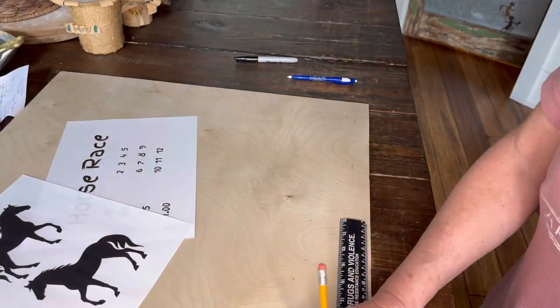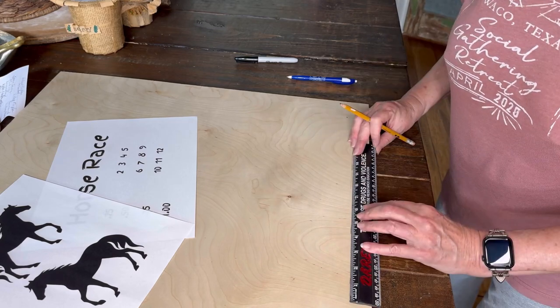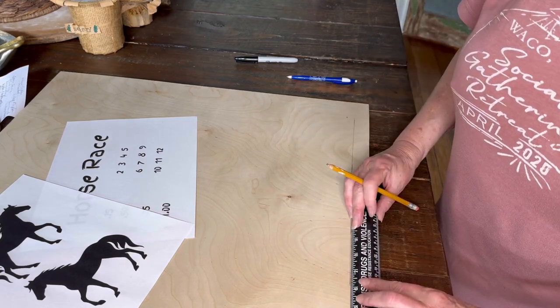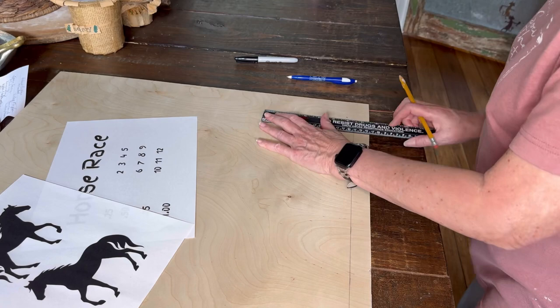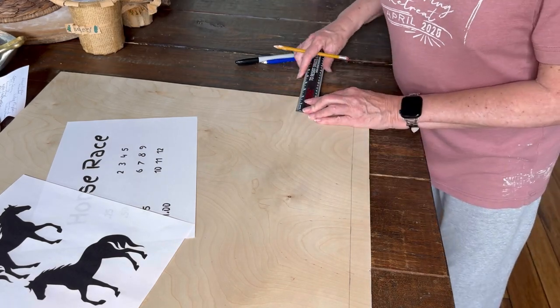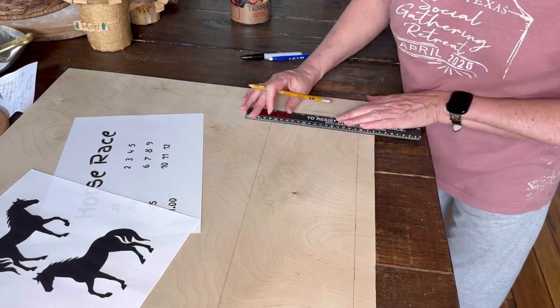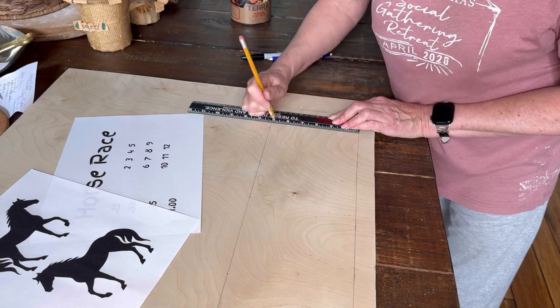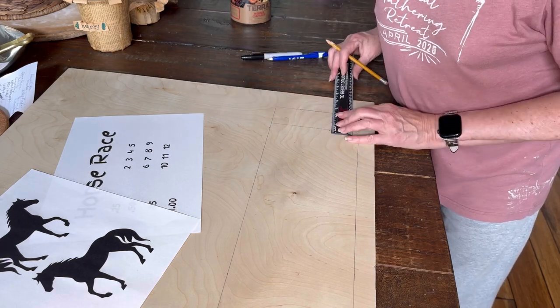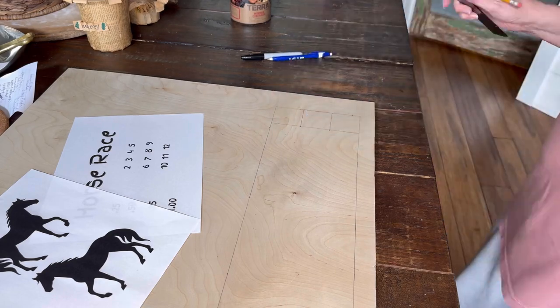Once you have your board sanded and sealed and it's silky smooth, you're ready to begin adding your grid to the plywood. What we're going to do first is draw off the bottom part of the board. This is actually the scratch section of the board and I'm going to stick in here a little graphic that shows you the exact dimensions that I used.